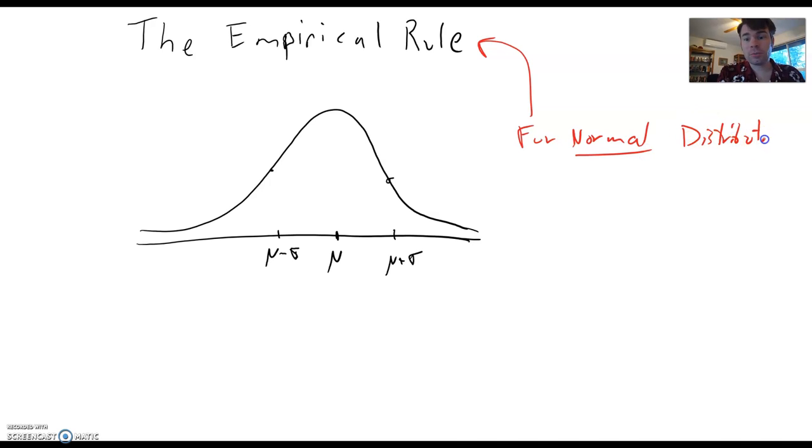So what is a normal distribution? Some of you may know this better as a bell-shaped curve. And what does the empirical rule say? The empirical rule says for a bell-shaped curve, 68% of the data is within one standard deviation of the mean.